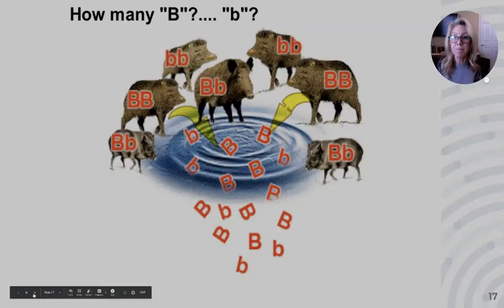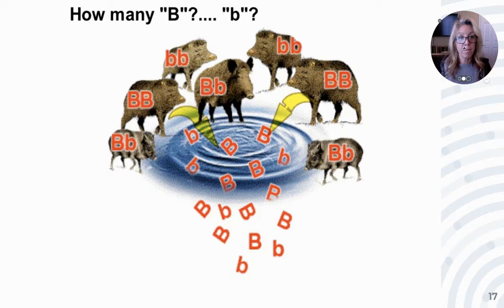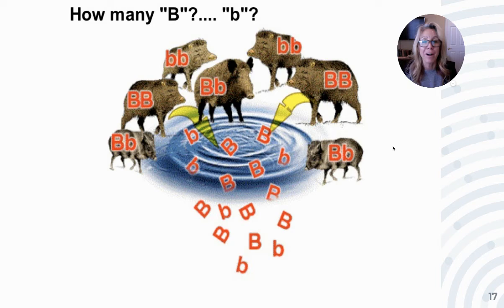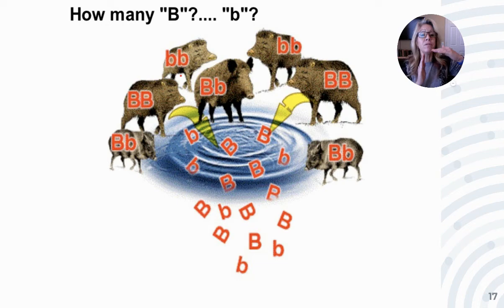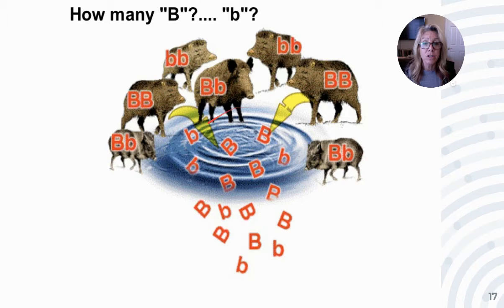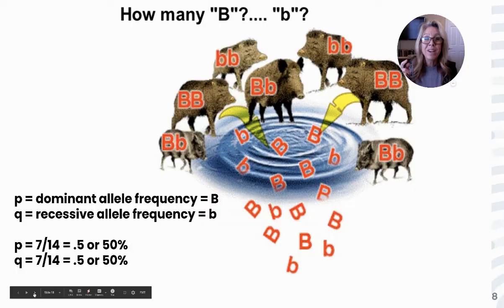Let's look at this situation — maybe wild boars. Big B means bristly hair and little b is smooth hair. Looking at their genotypes: one individual is BB, another is Bb — they'd still have bristly hair. To have smooth hair, you'd need bb. When you talk about populations, you're not talking about just two individuals mating — it's all the alleles within that population. Imagine each wild boar throwing in their two alleles into the gene pool, and we want to count how many are big B and how many are little b.